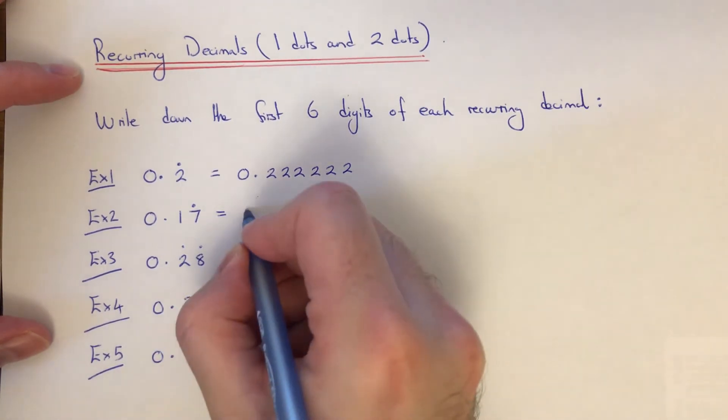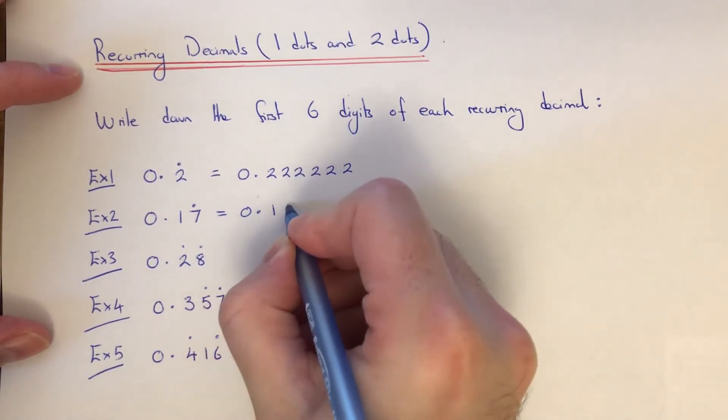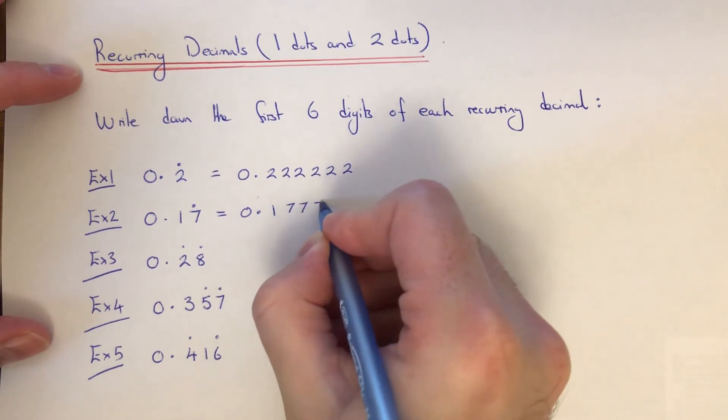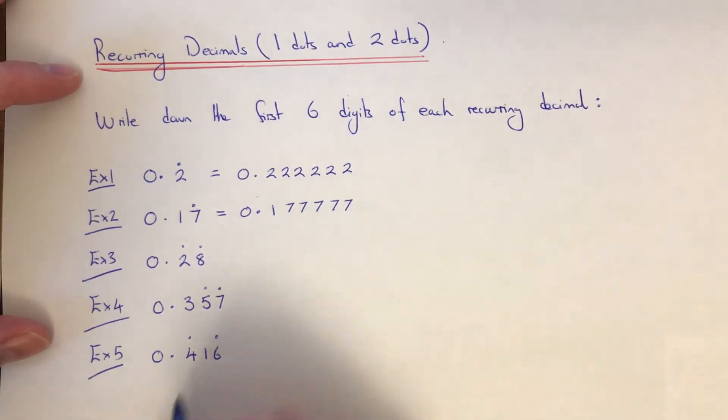Example three: this time we have a dot on the two and a dot on the eight, so this means the two and eight are getting repeated at the end. So it's not point two eight, two eight, two eight.